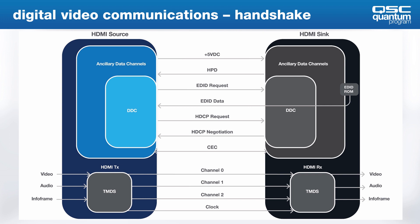At this point, one of two things will happen. If the source is HDCP compliant, it will send an HDCP request. If the source is not HDCP compliant, then the source will start delivering unencrypted video via TMDS.